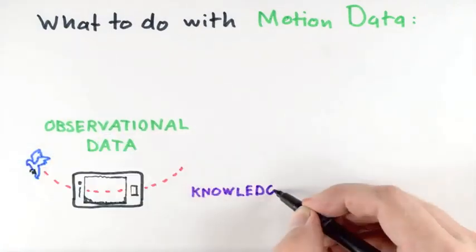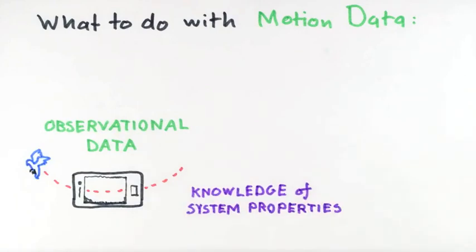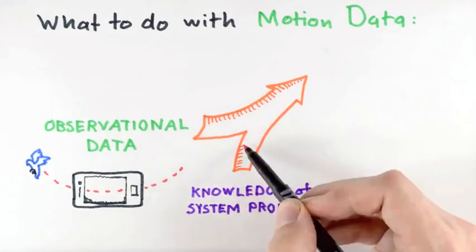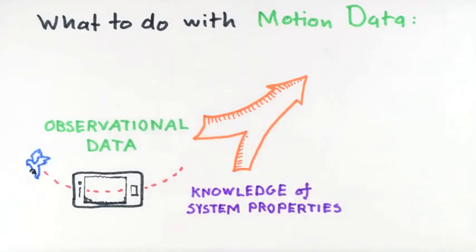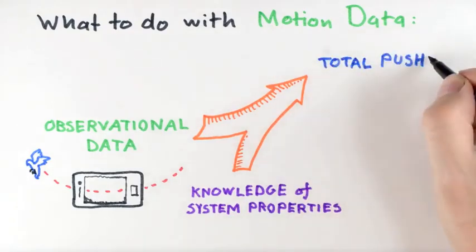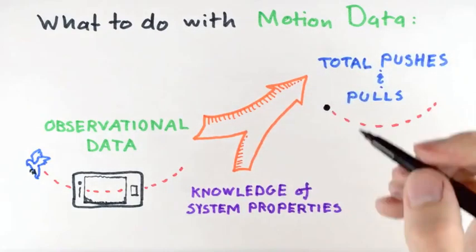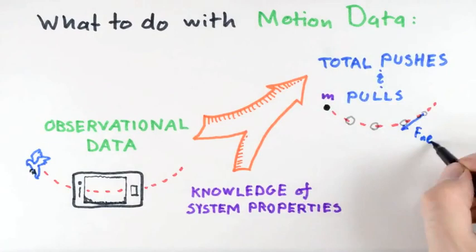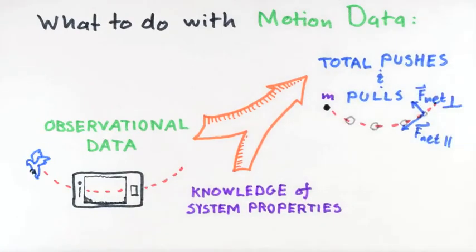We'll combine that with some knowledge of system properties and then apply our fundamental principle, Newton's second law, in order to determine the total pushes and pulls from the surroundings that are responsible both for speeding up, slowing down of the object, as well as curving of the object's trajectory.